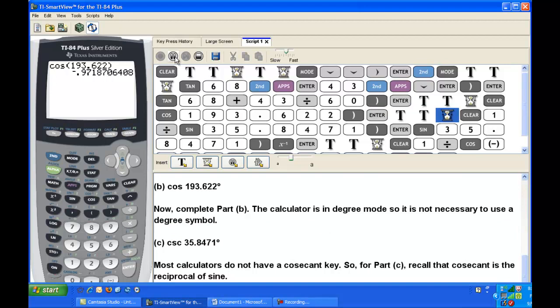Our next exercise is to find the cosecant of 35.8471 degrees. Most likely, your calculator doesn't have a cosecant button. But we recall that cosecant is the reciprocal of sine. So you can just enter 1 divided by the sine of 35.8471 degrees, and that will give you the correct value.